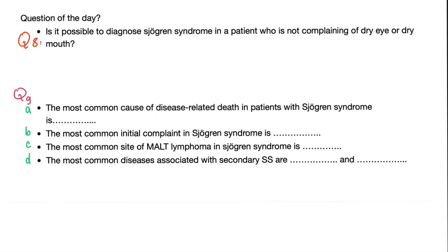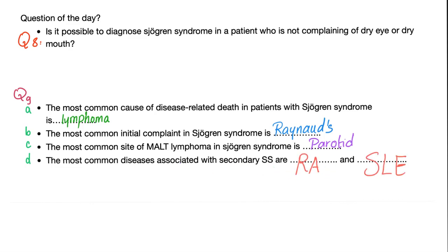Question nine, number one: what's the most common cause of disease-related death in Sjogren's syndrome? The answer is B-cell lymphoma — the MALT lymphoma. The most common initial complaint in Sjogren's syndrome is Raynaud's phenomenon — patriotic red, white, and blue. The most common site of MALT lymphoma in Sjogren's is the parotid gland. The most common diseases associated with secondary Sjogren's are rheumatoid arthritis and lupus.